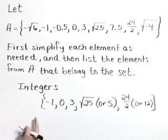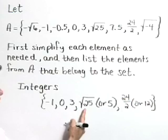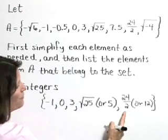So from the set A, the list of integers are negative 1, 0, 3, the square root of 25 or 5, and 24 halves or 12.